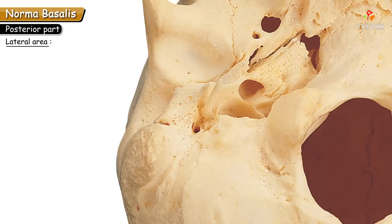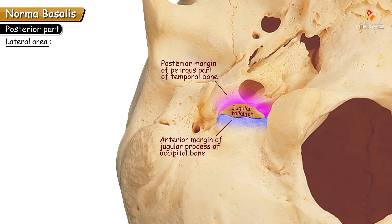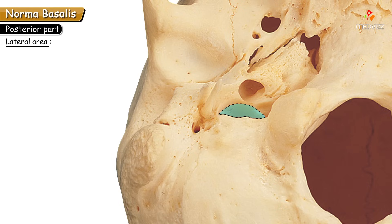Now we discuss the very important jugular foramen, which is unique because three cranial nerves pass through it — the only foramen where three cranial nerves travel together. It is situated between the anterior margin of the jugular process of the occipital bone and the posterior margin of the petrous part of the temporal bone — the gap at the petro-occipital suture. It is called jugular because the internal jugular vein passes through it.